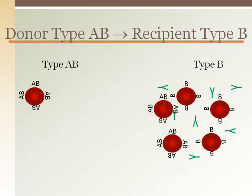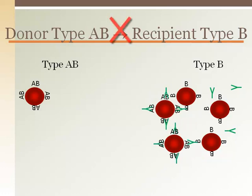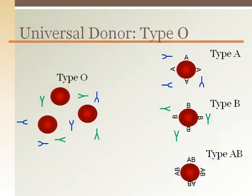Blood type AB cannot donate to type B because the anti-A antibodies in the plasma of the B recipient will bind to the A surface markers of the incoming red blood cells. However, the B surface markers will not be a problem. Remember, just consider the donor's red blood cells and the recipient's plasma antibodies when determining blood type compatibility. Type O is the universal donor because it has no surface markers on the red blood cells, which can be attacked by any recipient's plasma.